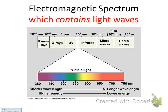Sunlight is high-quality energy that travels in waves. One ray of sunlight, called a photon, appears clear but it actually has all the colors in it — visible light. That's ROY G BIV: red, orange, yellow, green, blue, indigo, and violet.